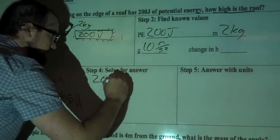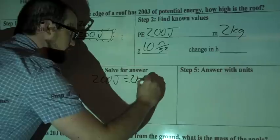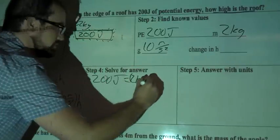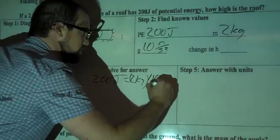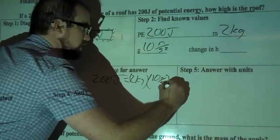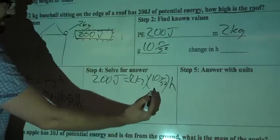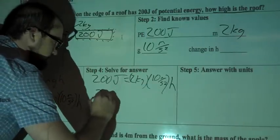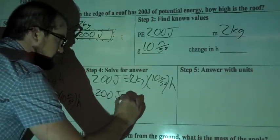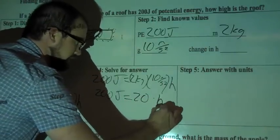So we'll rewrite everything, we've got 200 joules equals 2 kilograms times 10 meters per second squared. And then we've still got our height by itself. So we'll multiply out what we can, so 2 times 10 right here, and I'll leave 200 by itself. So 200 joules stays there, 2 times 10 is 20, and we've still got height there by itself.